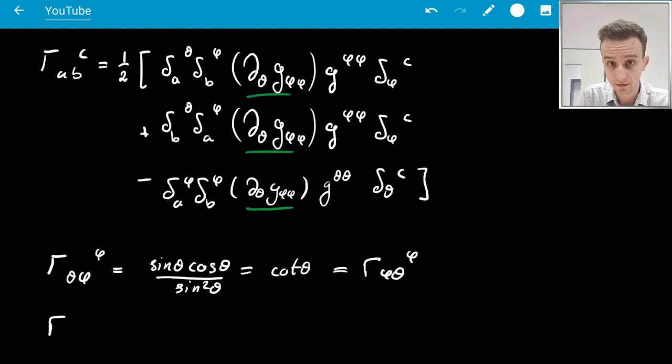And now the third term, again, the one-half cancels with the derivative of sine squared, the two in the derivative of sine squared. And now the final one, Γ^φ_φθ.